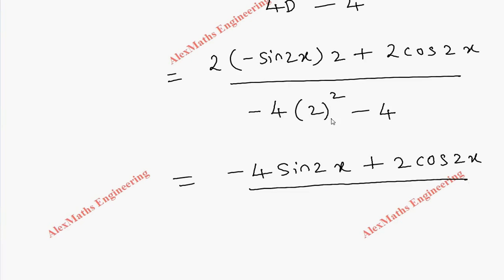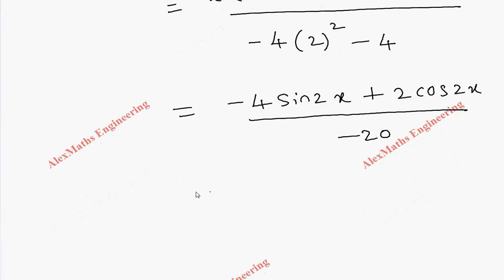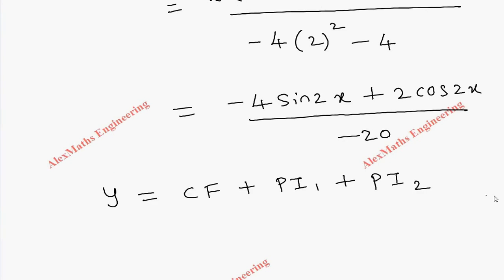So totally the denominator is minus 20. Combining everything we get the complete solution which is CF + PI₁ + PI₂.